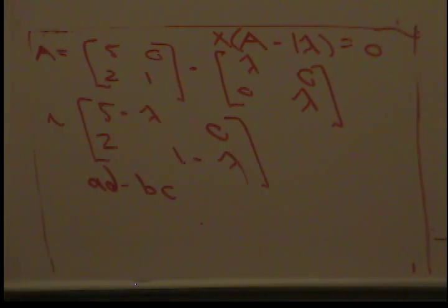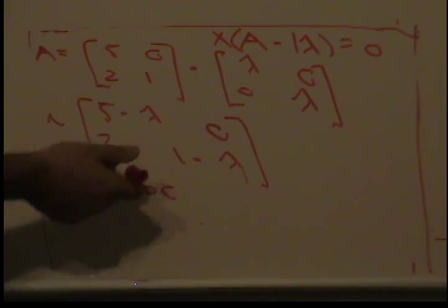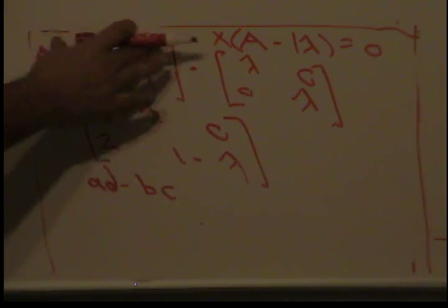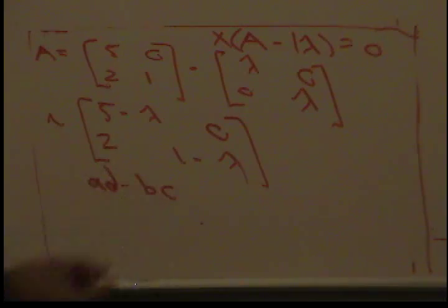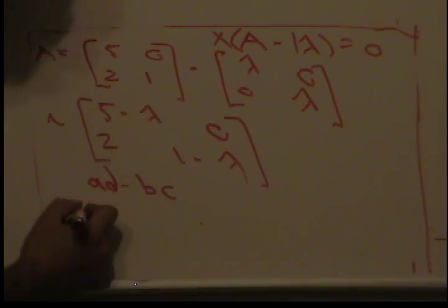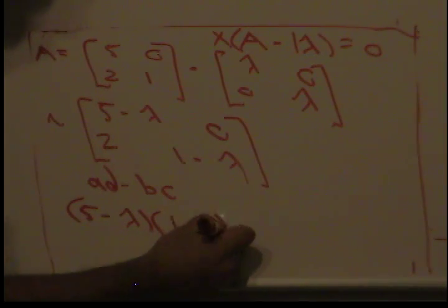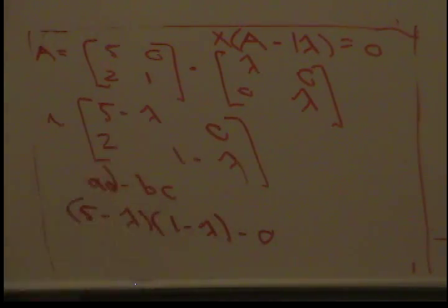You can expand or row reduce to upper triangle form and multiply the diagonal to get the determinant. But for this we just have a two by two matrix, so it's simply just ad minus bc. So it becomes 5 minus lambda multiplied by 1 minus lambda minus 0 times 2.